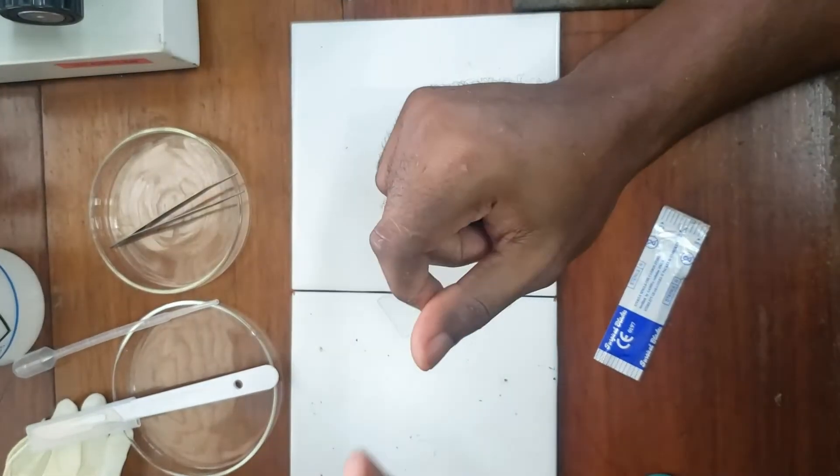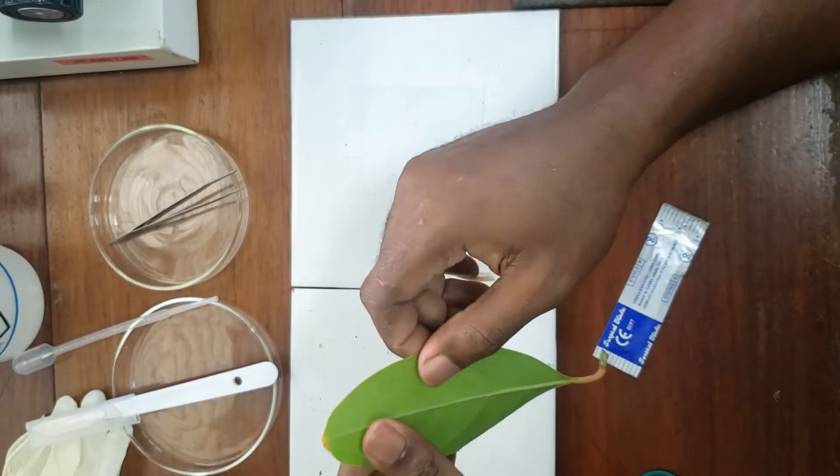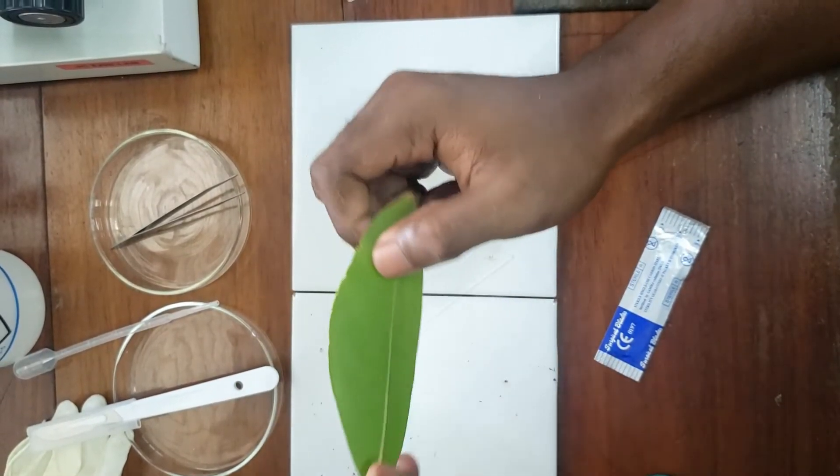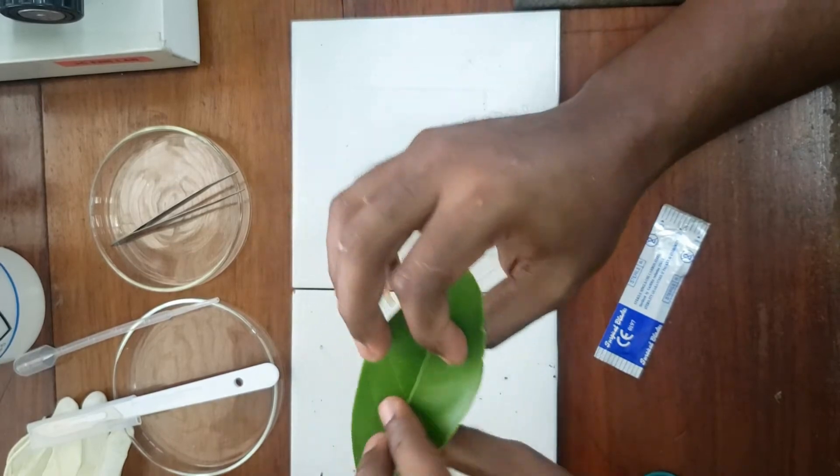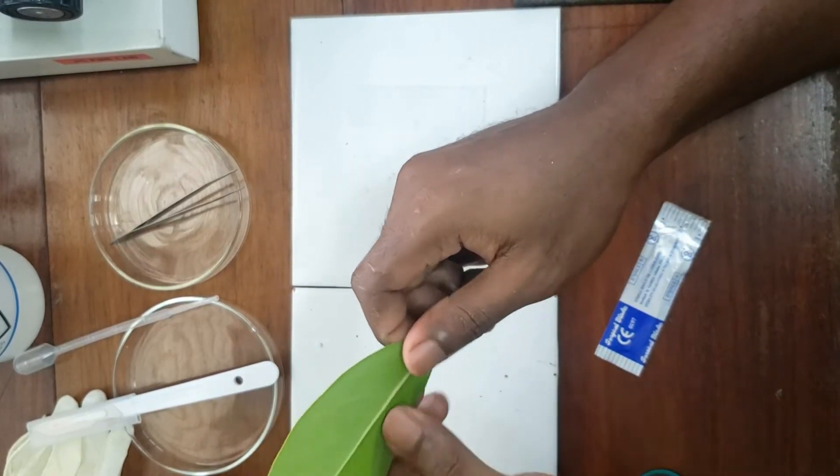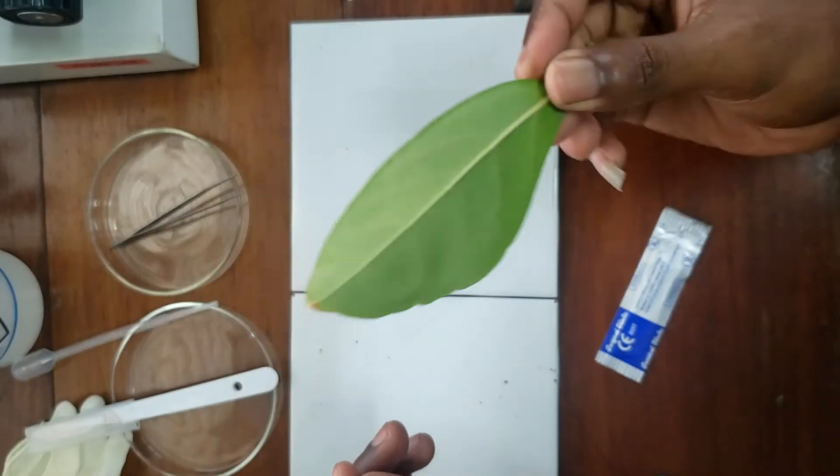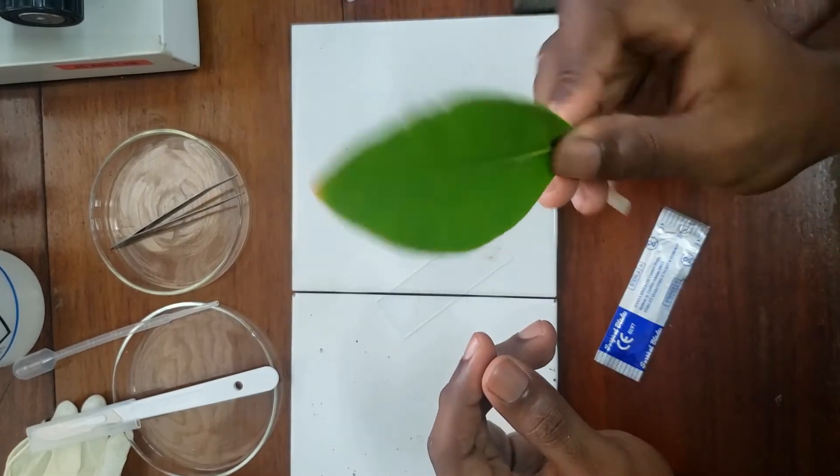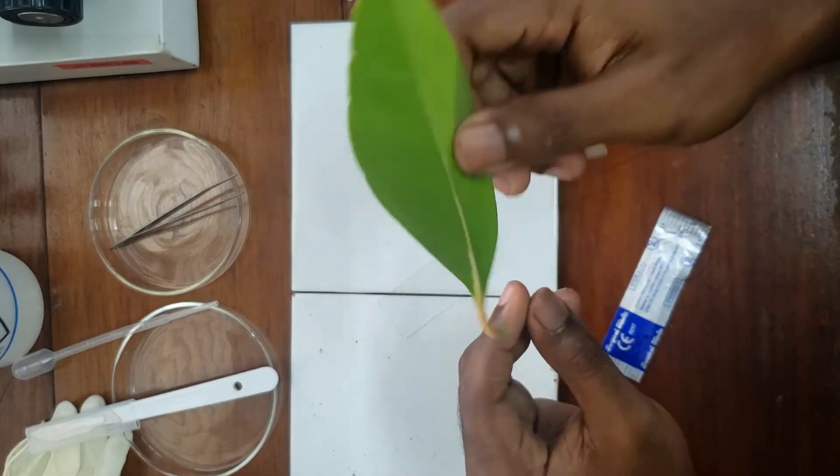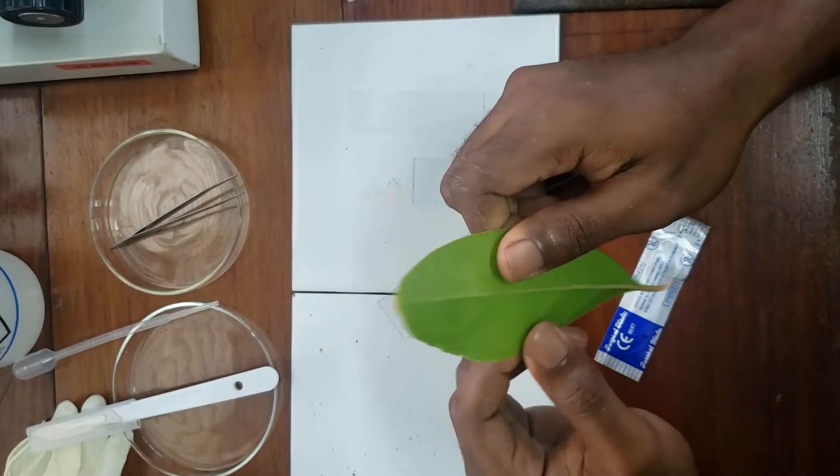Good day students, so today we're going to prepare a transverse section of the lower epidermal layer of a leaf. What I have here is a leaf that grows just outside the lab. I'm not too sure what plant this is from.